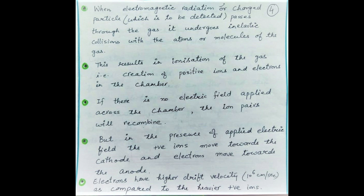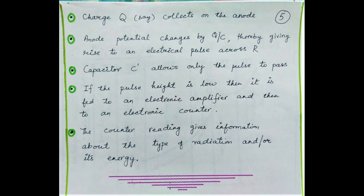Electrons, being very light in mass, have very high mobility and their drift velocities are approximately of the order of 10 to the power 6 centimeters per second, which is much higher than the mobility of the heavy positive ions moving towards the cathode. In this process, a charge q collects at the anode. This accumulated charge will cause a change in potential at the anode given by q divided by the capacitance C, and this gives rise to an electric pulse across the resistance R.